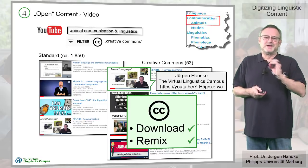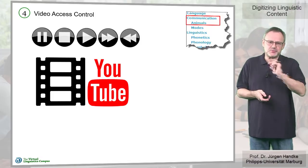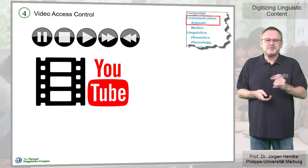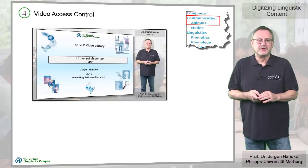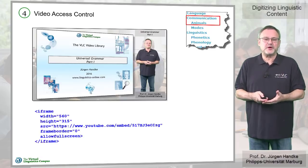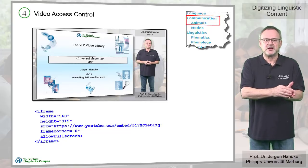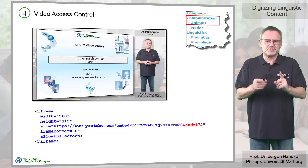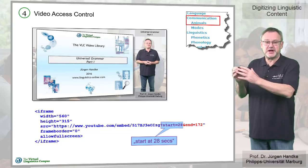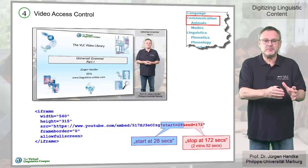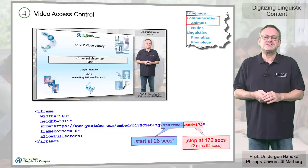An important option that gives you full video access control should also be mentioned. If you embed a video like this one and use the standard code for embedding, it will normally be played from the beginning to the end. However, an extension of the source attribute in the HTML code allows us to specify the start time and the time where the video should stop. I will come back to these details in another video.